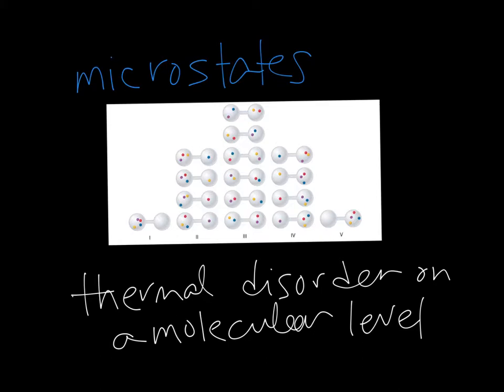Let's think about what thermal disorder means — disorder means chaos, not being in order, not being aligned. Disorder means being able to be any place. Let's think about what thermal heat energy disorder would mean on a molecular level. We're going to use a word called microstates. A state is a way of being, and micro is very tiny. So microstates are thinking about where molecules can be, and how many places they can be. That gives us an idea of possible disorder on a molecular level. This thermal disorder is the same as entropy.